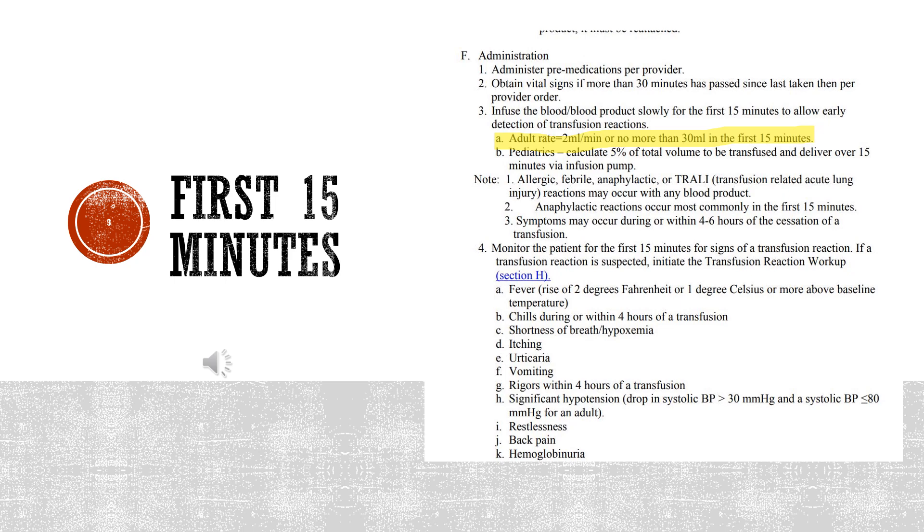In the first 15 minutes, you're going to calculate the adult rate to equal 2 mls per minute or no more than 30 mls in the first 15 minutes. So this is the calculation that we're going to do the math for.